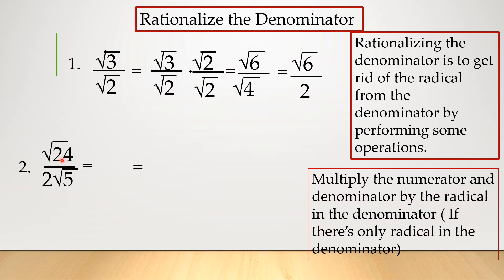There are different techniques on how you can do this. For the next one with square root of 24 over 2 square root of 5, you can rationalize right away by multiplying square root of 5, but the number inside the radical sign will get bigger. So what I want to do is simplify first. I can rewrite 24 as 4 times 6, so it will be easier later.